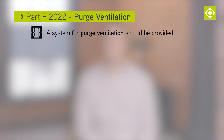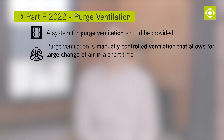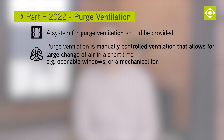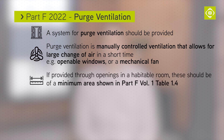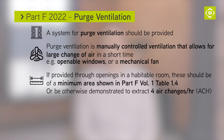A system of purge ventilation should be provided. Purge ventilation is manually controlled ventilation that allows for a relatively large change of air in a short period of time — for example, opening windows or a mechanical fan. If this is provided through openings in a habitable room, these must be of a minimum area shown in Table 1.4, or otherwise demonstrated to provide 4 air changes per hour.